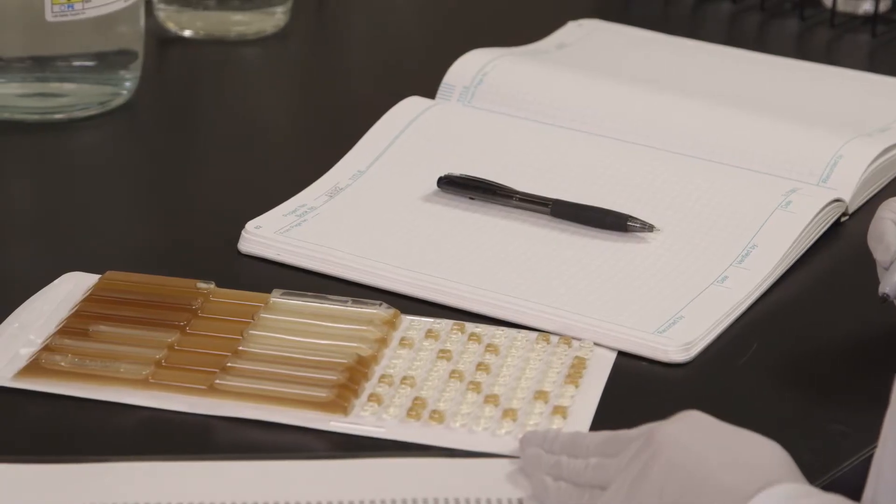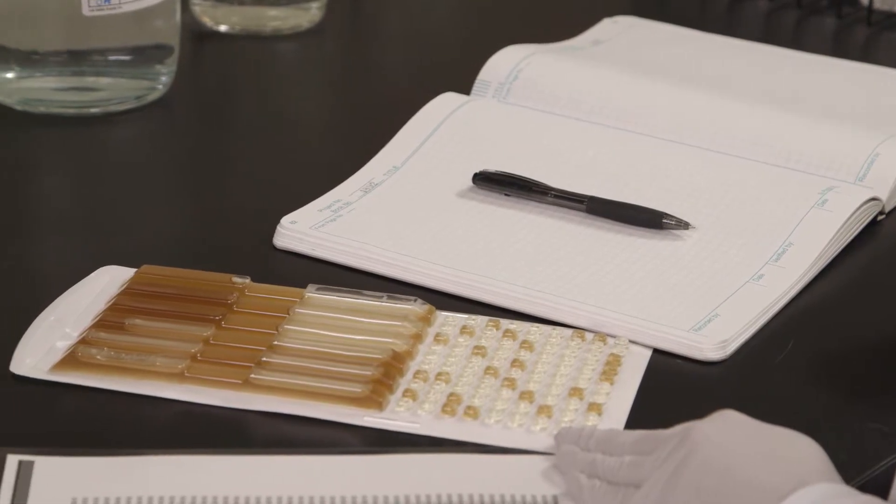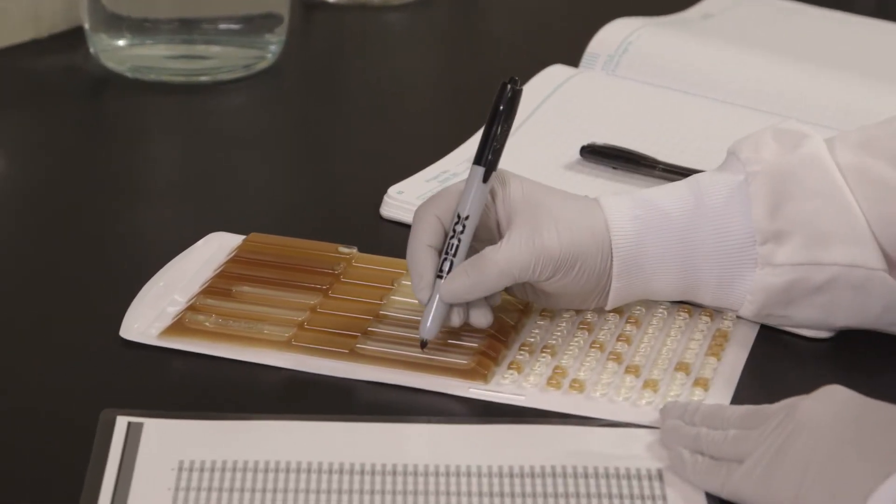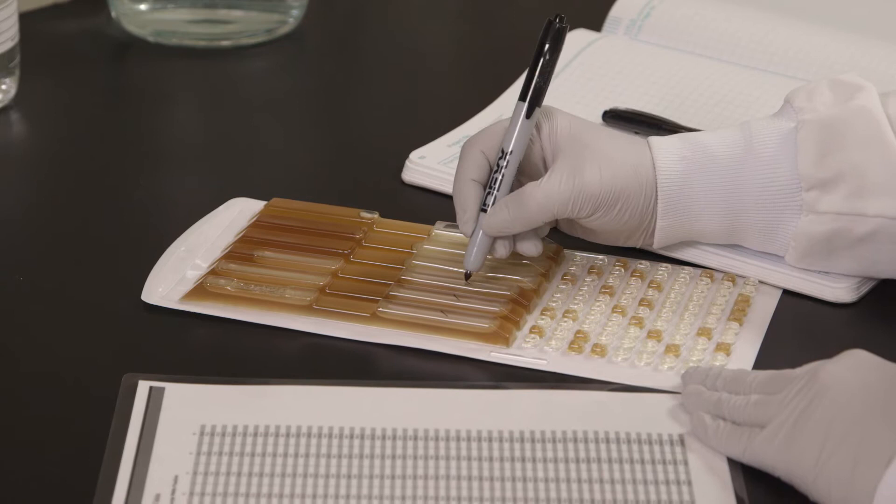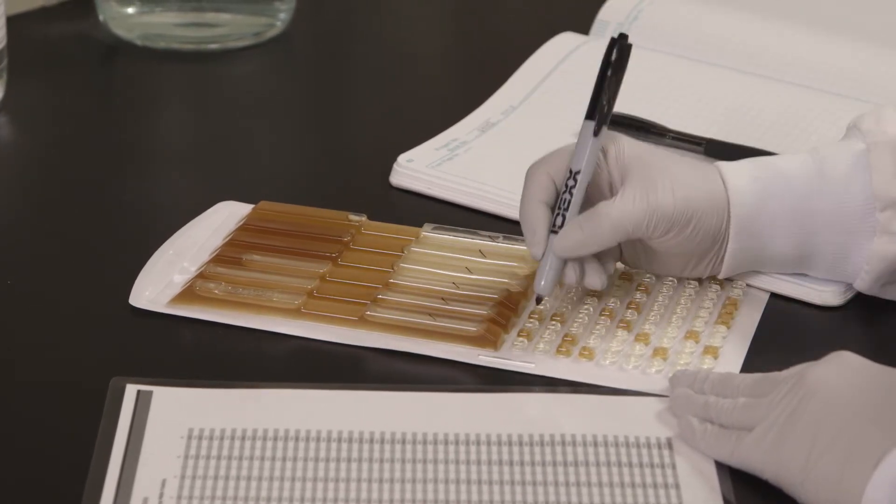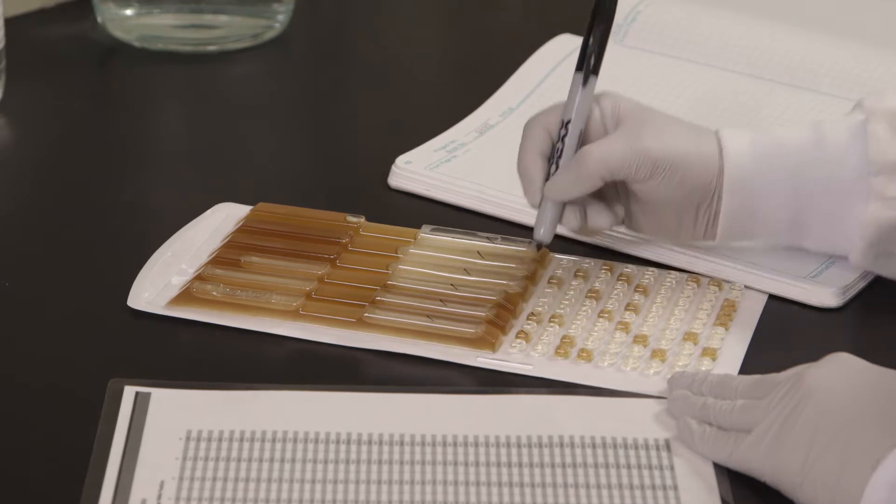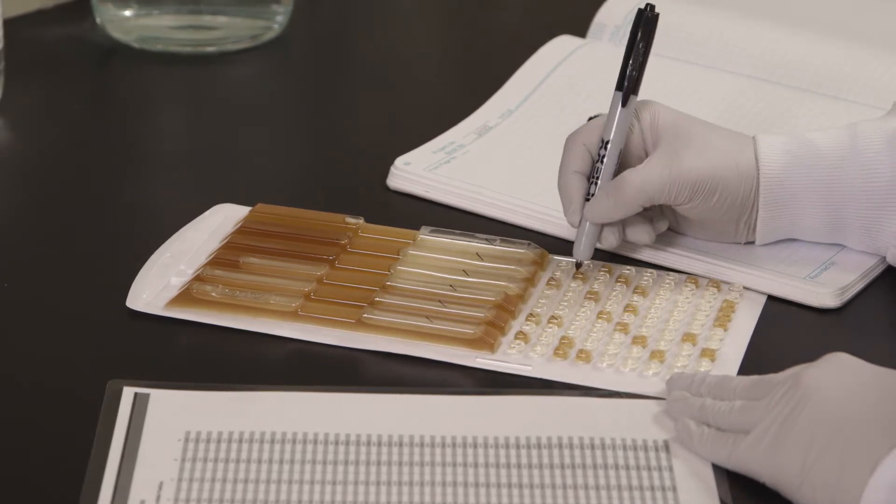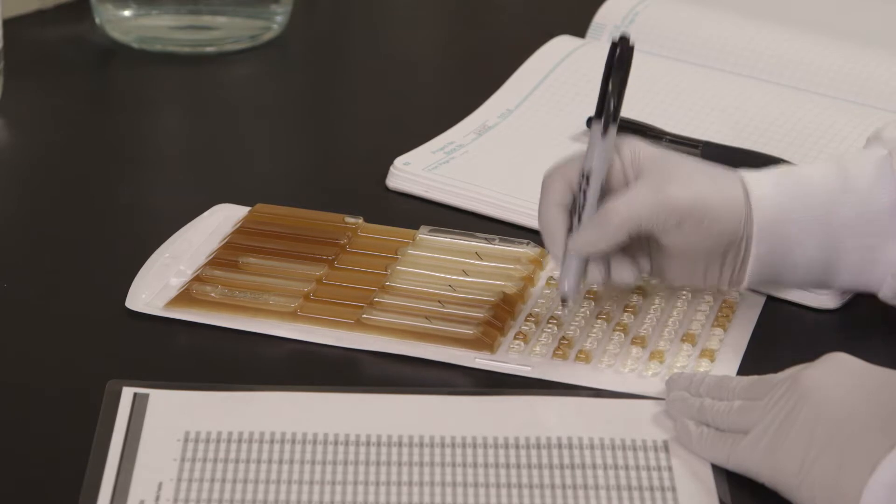After incubation, look for any indication of brown color and or turbidity, greater than the negative control, which indicates a positive well. Mark each brown or turbid well. Count the marked wells, and then refer to the MPN table included with the Quantitray LEG-ALERT trays.